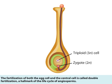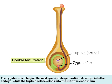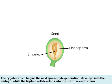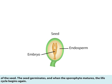The fertilization of both the egg cell and the central cell is called double fertilization, a hallmark of the life cycle of angiosperms. The zygote, which begins the next sporophyte generation, develops into the embryo, while the triploid cell develops into the nutritive endosperm of the seed.